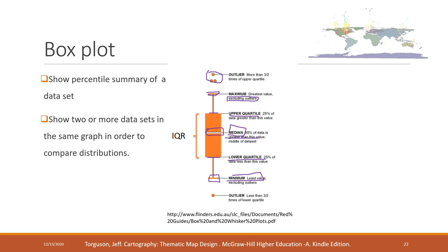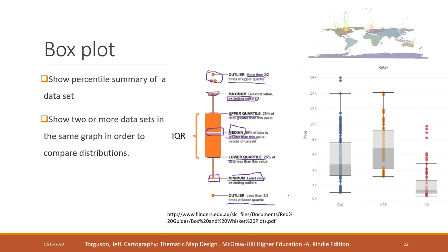In a box plot, the minimum and maximum values are not the absolute biggest or smallest — they exclude the outliers. Outliers are defined as values greater than 1.5 times the upper quartile or lower than 1.5 times the lower quartile. In this example with three variables, the yellow one has the highest median, the red one has the lowest minimum, and the blue one has the most outliers.